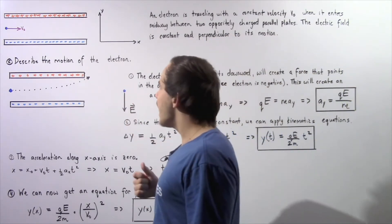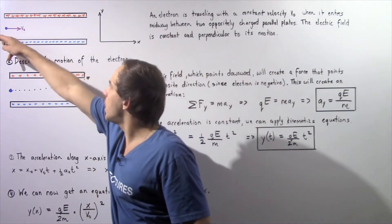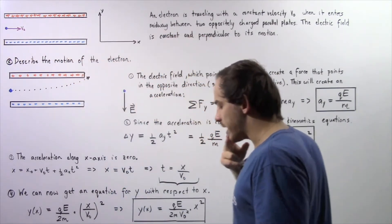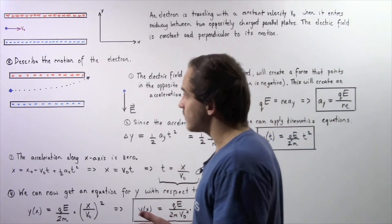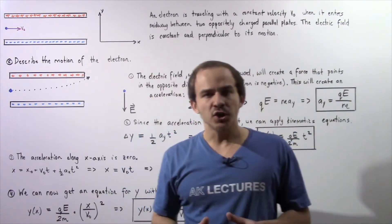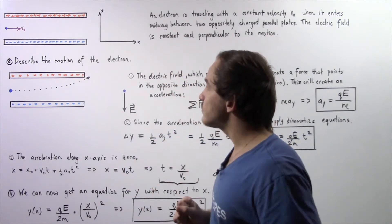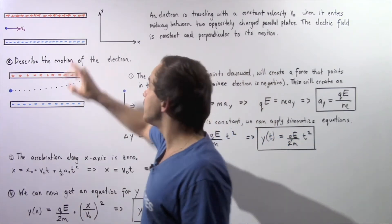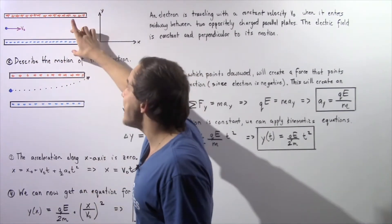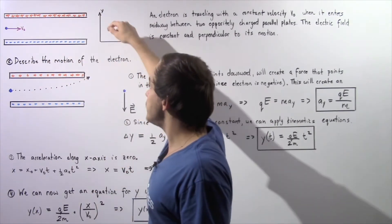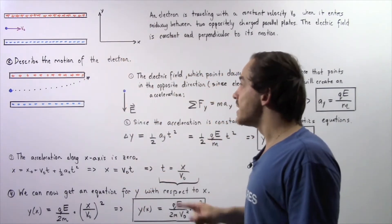Now we want to describe the motion of our electron as it travels along this pathway. Let's begin by determining the direction of the electric field. We know electric field lines begin on the positive end and end on the negative end, so our electric field points directly downward.